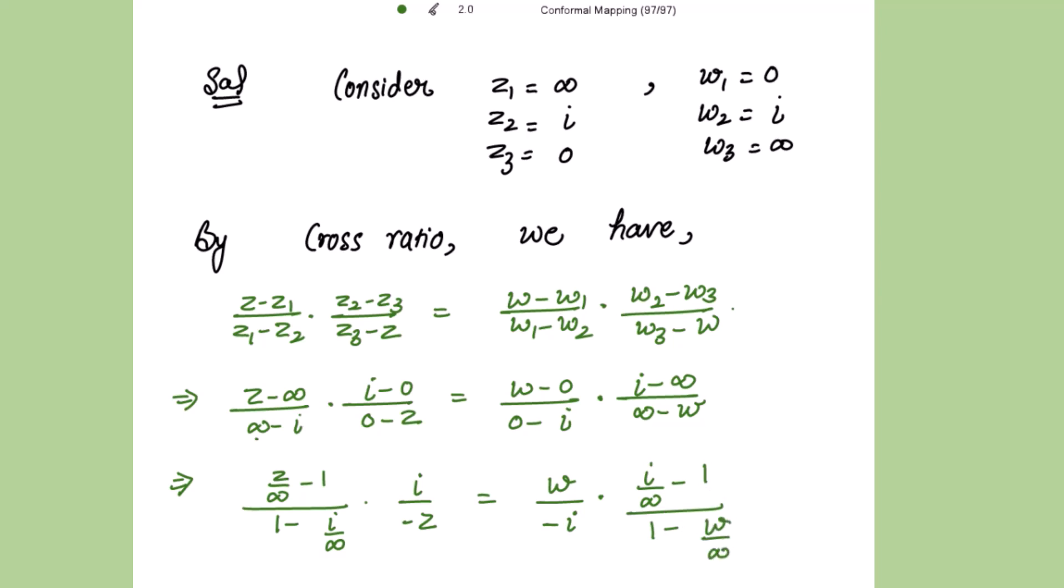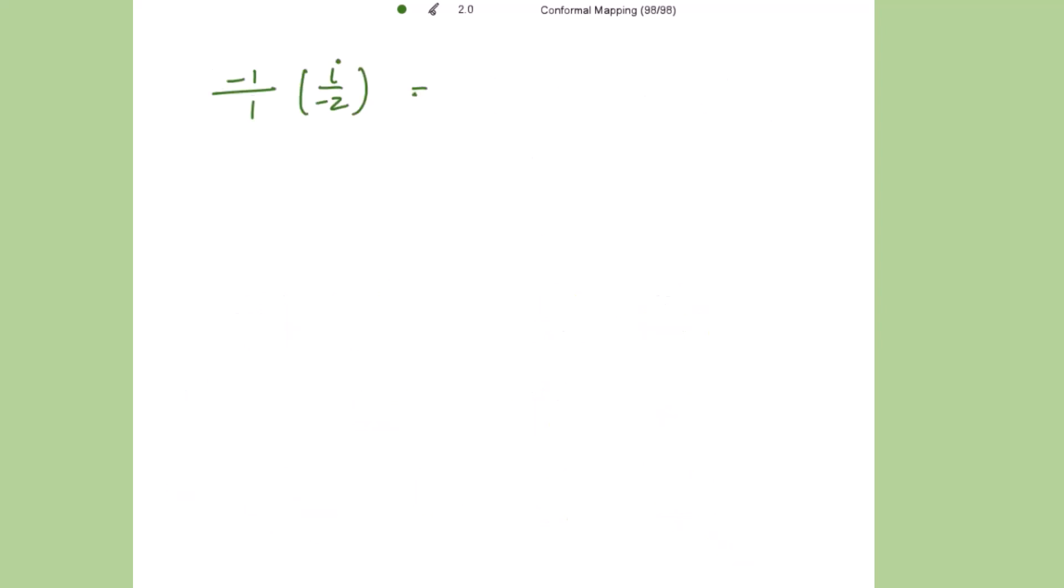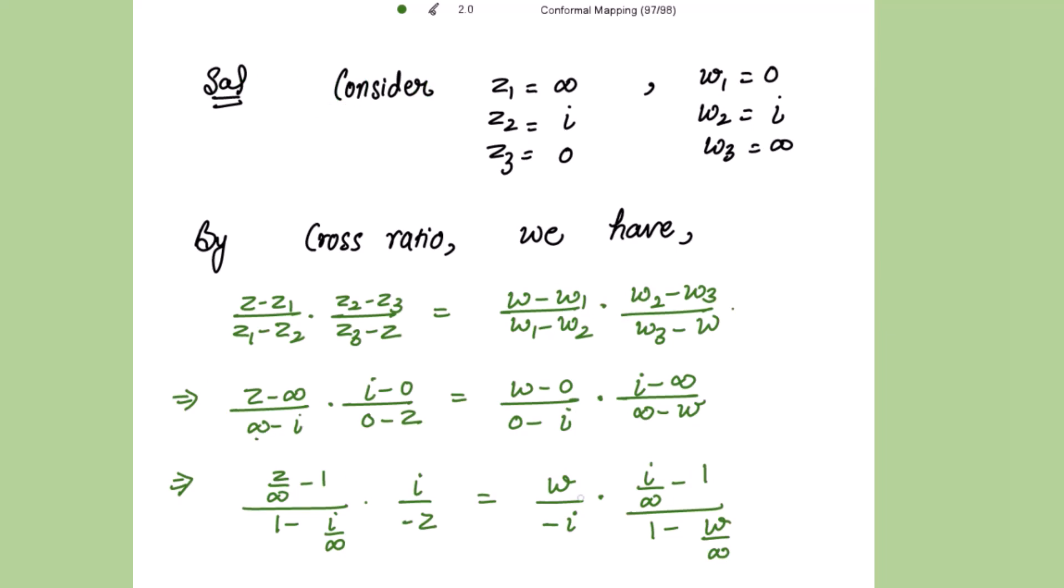And it is very easy to see that z over infinity is 0, iota over infinity is 0, w over infinity is also 0. So we get 0 minus 1 in the numerator that is negative 1 divided by 1 minus 0 that is 1, and iota over negative z. This is equal to w over negative iota and this is 0 minus 1 that is negative 1 over 1 minus 0 that is 1.